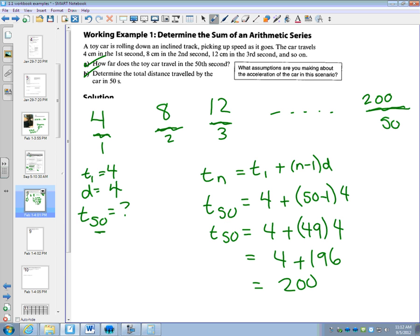B says now determine the total distance. So what I'm saying is I'm adding now. So after the first second it went 4, and then it did 8 centimeters in the next second. So after second 1 and 2 have passed, it's gone 12. And then after the next one, it's gone a total of 24. So I'm adding together.